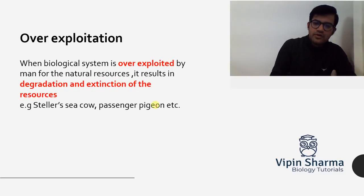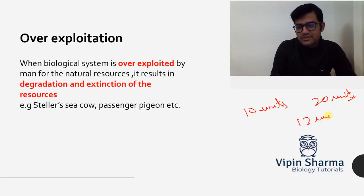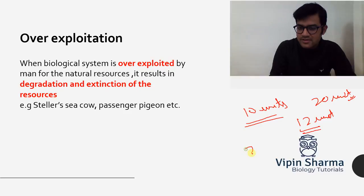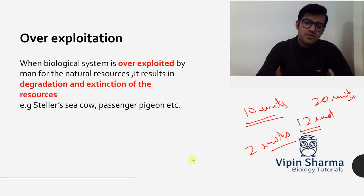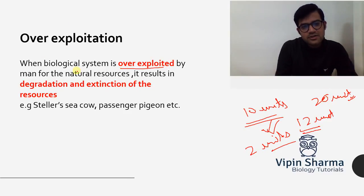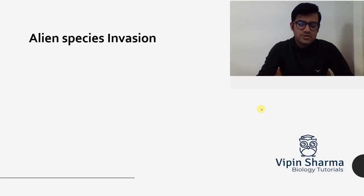Moving on to over-exploitation: say your need is 10 units, there are 20 units available, but you are taking 12 units. You needed 10 but are utilizing 12 — you are exploiting 2 units more than needed. This is over-exploitation: due to greed and desire for luxury, we utilize more than needed. When biological systems are over-exploited by humans, natural resources degrade and species go extinct.